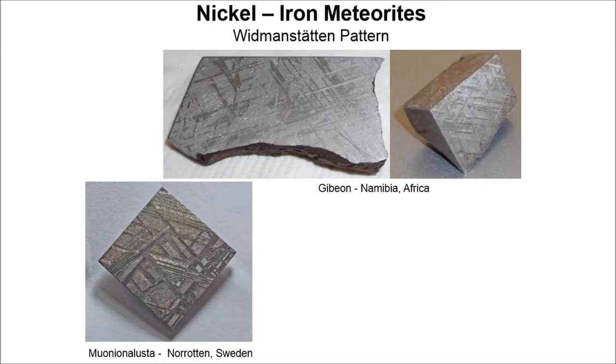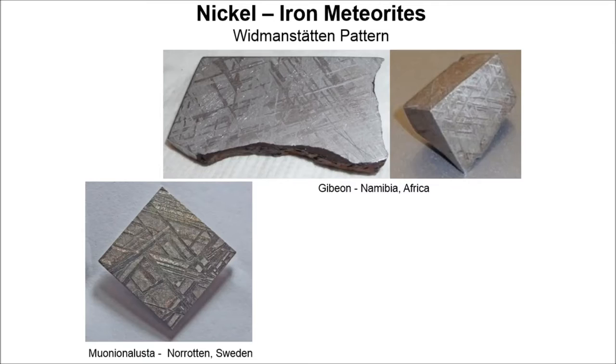The first meteor I'm going to talk about is this one, which is a piece of nickel-iron metal. Most people when they touch or hold it, the first thing they notice is it's really heavy — surprisingly heavy for its size. You can see that there's one or two surfaces that are the natural surface, and then we've cut it open so you can see what it looks like on the inside. You'll notice these patterns where they've polished it and given it a metal etch so we can actually see these lines. They're very special.